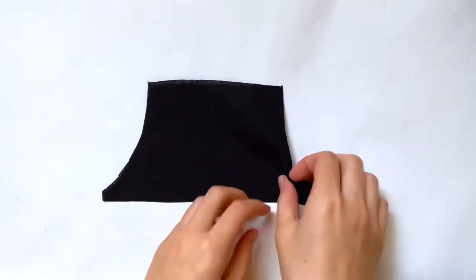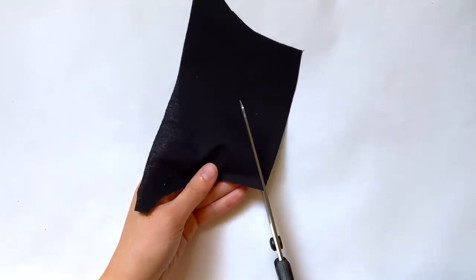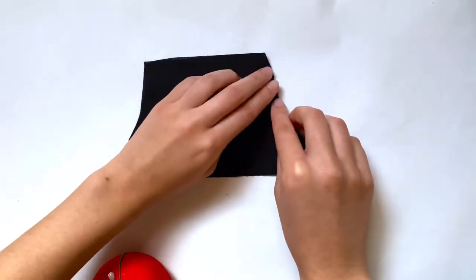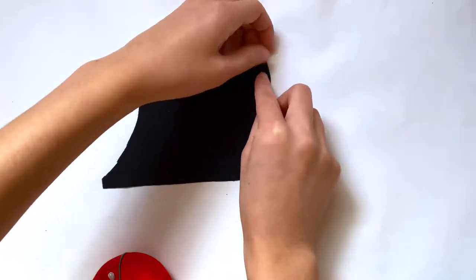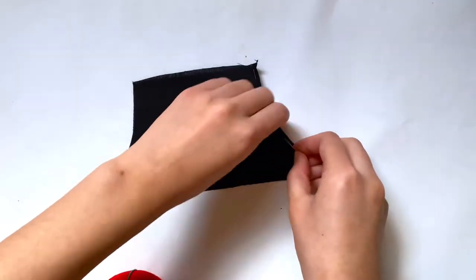After everything's cut out I'm going to grab my piece for the top and what I want to do is fold over and hem all of the sides except the bottom one. To make that easier I'm first going to make a few cuts right at the corners just so all the sides can fold over. Now I'm going to fold over a few millimeters of each edge.